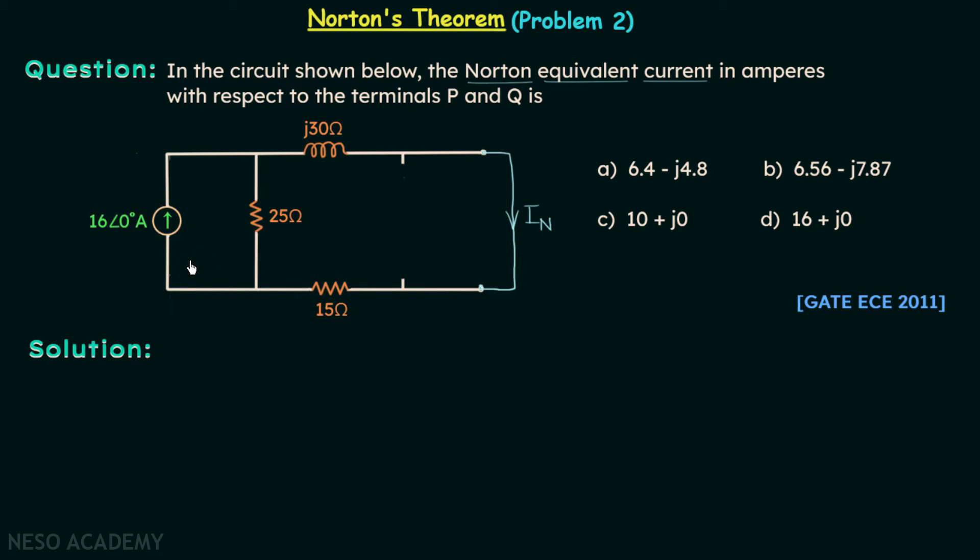So it is visible that this current, 16 angle 0 degree, is getting divided at this node. It is getting divided into two currents, and this current is current IN. So we can have IN with the help of current divider rule. Let us use the current divider rule to find out current IN.